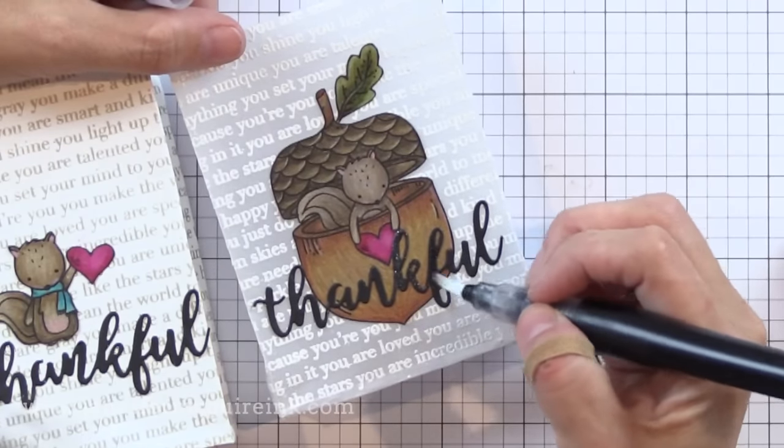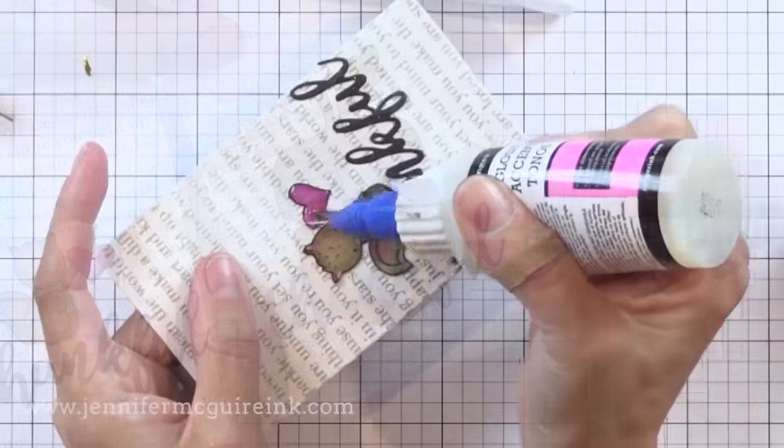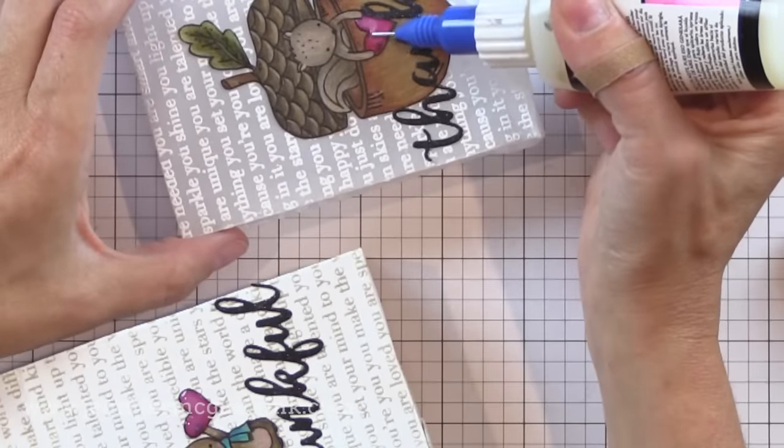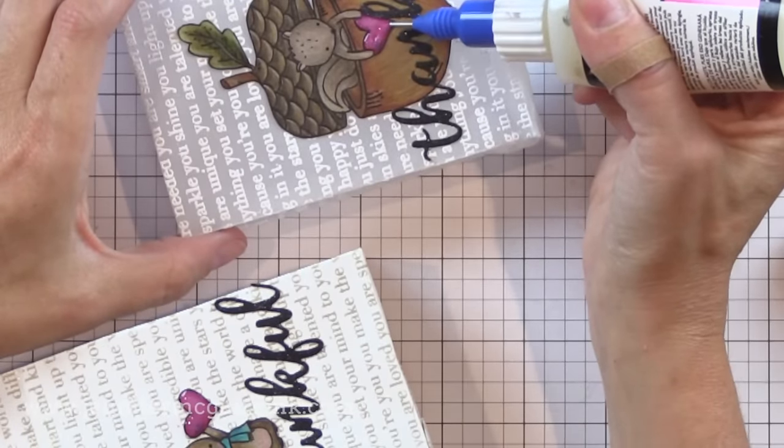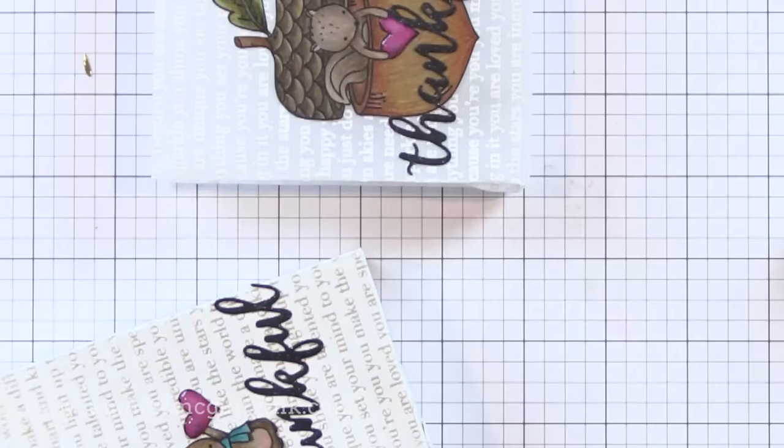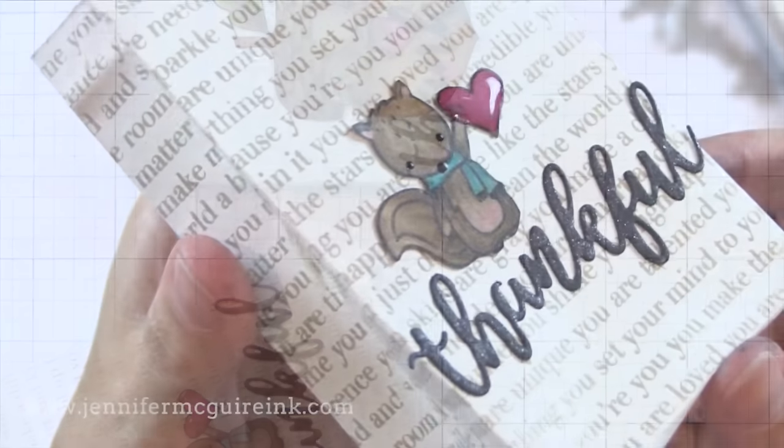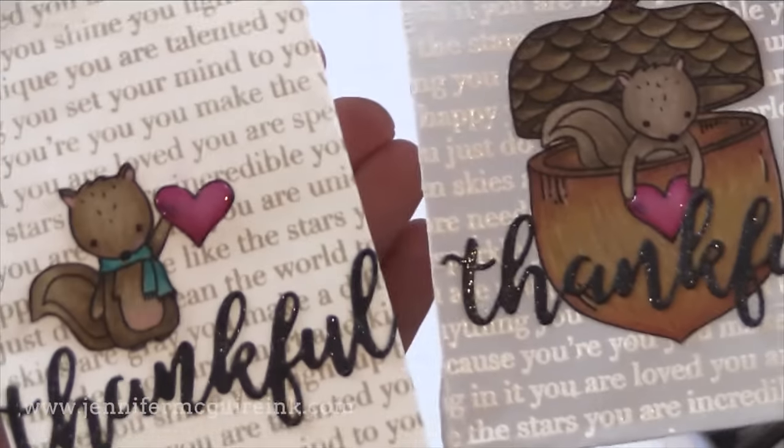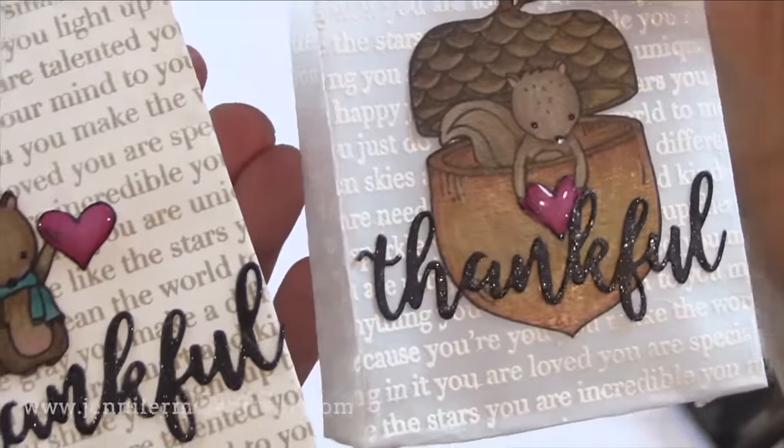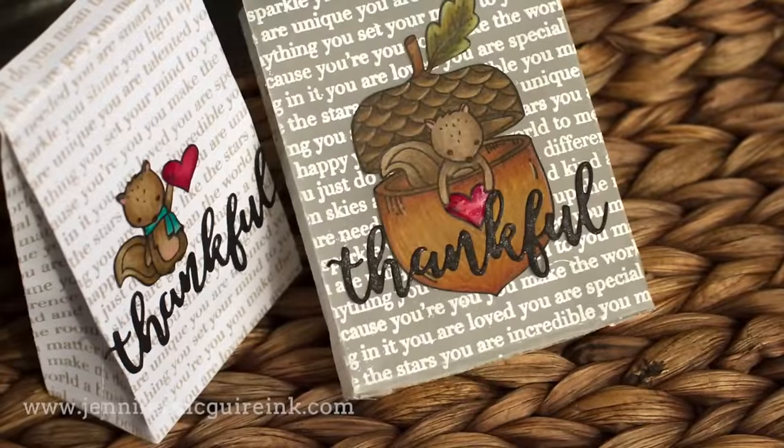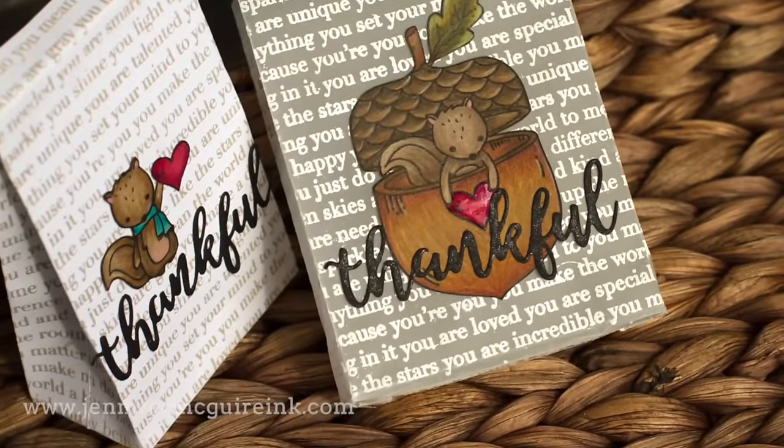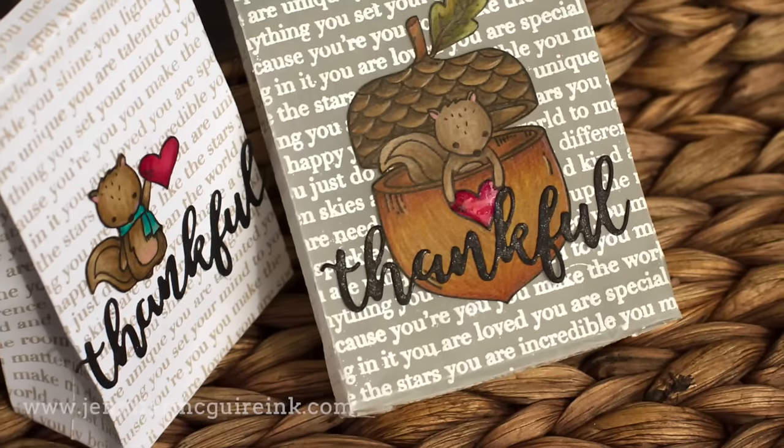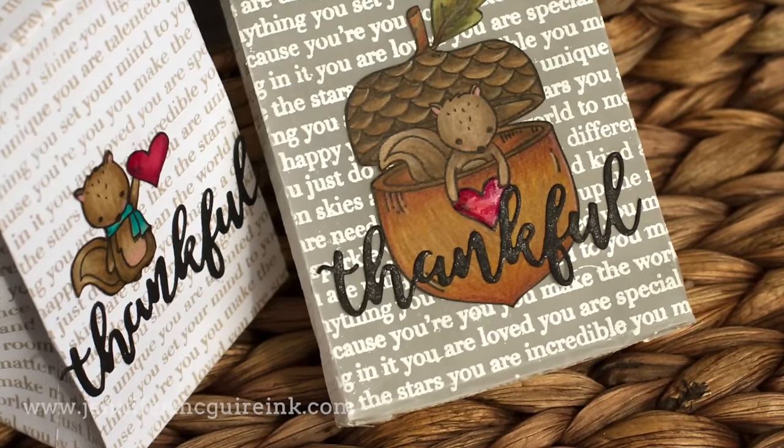I'm using my Spectrum Noir shimmer pen to add some shimmer to the thankful die cuts. And I'm using glossy accents to add some shine, a clear coating to the little hearts just for some added interest. I also put a tiny little dot of glossy accents on his eyes and his nose so those stand out too. And here you can see the shine that you get from the glitter pen and the glossy accents. So there you have a way you can take your envelopes and create cute little gift bags in no time at all.